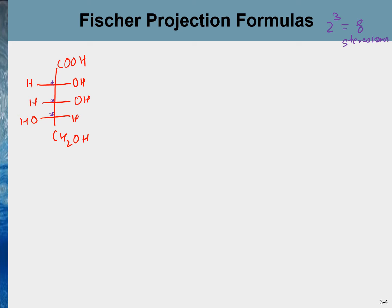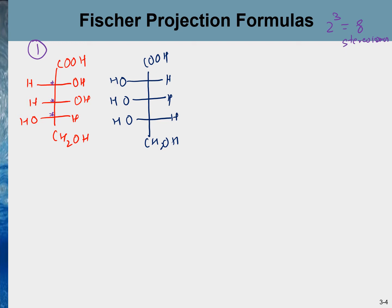Starting from structure number one, the first stereoisomer is its mirror image: OH and H are swapped at each center. COOH and CH₂OH remain the same. These two are enantiomers of each other — they are also stereoisomers, but specifically enantiomers.